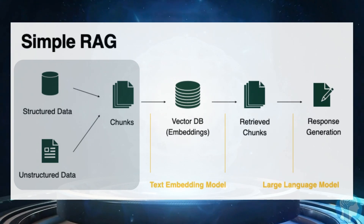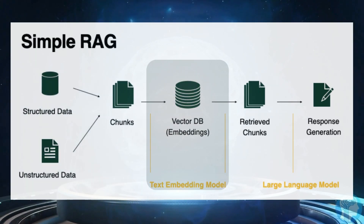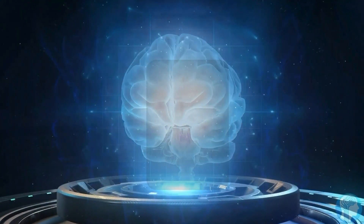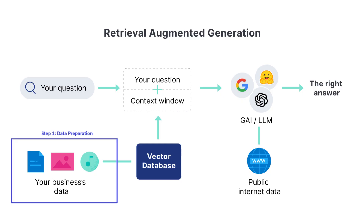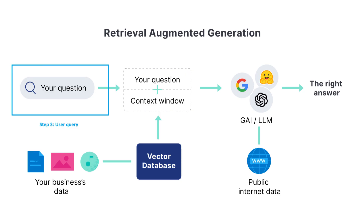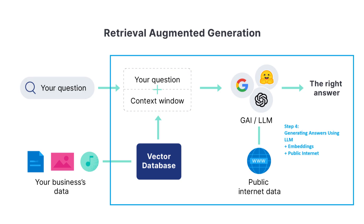RAG has three key components. One: document ingestion or chunking. Two: embedding and indexing. Three: retrieval and augmentation. Chunking means splitting PDFs, docs, or HTMLs into manageable text chunks. Embedding converts those chunks into vectors using models like OpenAI, BGE, or Instructor. Indexing stores them in vector databases like FAISS, Weaviate, or Pinecone. On a query, retrieval fetches the top-k similar chunks, and generation feeds them into an LLM to produce an answer.